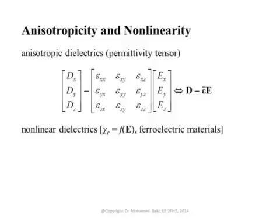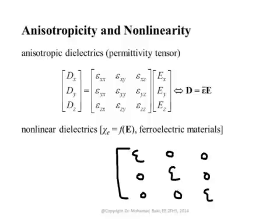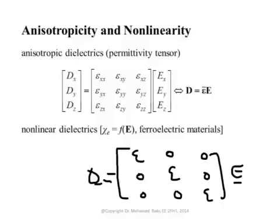We call this relationship a tensor. In this course, we assume the tensor has a diagonal form, so you can simply relate E and D by this tensor. The x-component of E gives rise to only the x-component of D, the y-component of E gives rise to only the y-component of D, and so on.